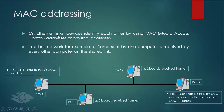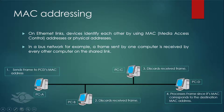On Ethernet links, devices identify each other by using MAC addresses or physical addresses. On a bus network, a frame sent by one computer is received by every other computer on the shared link. After the frame is received, the destination MAC address is verified. All devices discard the frame, except the device with the destination MAC address.